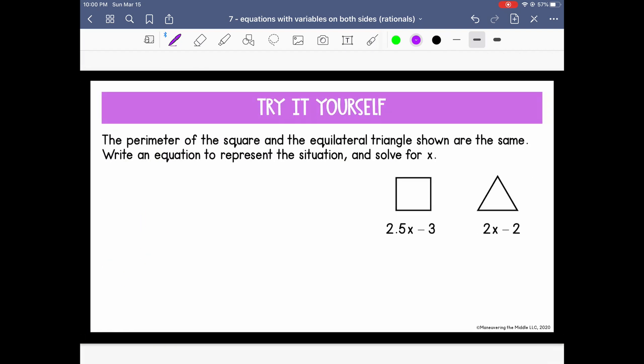One more. Feel free to pause it first and try this one yourself. Here it says the perimeter of the square and the equilateral triangle shown are the same. Write an equation to represent the situation and solve for X. Okay, so the perimeter of this square, because it's a square, let's start here. We know the perimeter of the square is the same or equal to the perimeter of the triangle. And not just any triangle, but equilateral, meaning all three sides are the same length.